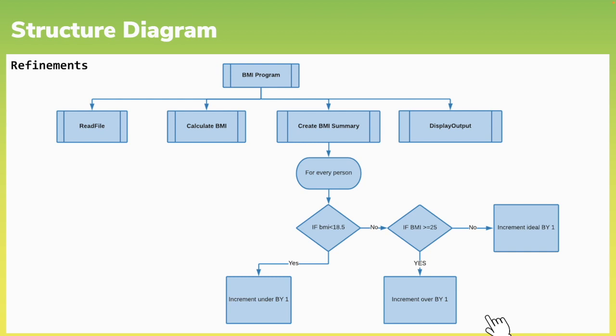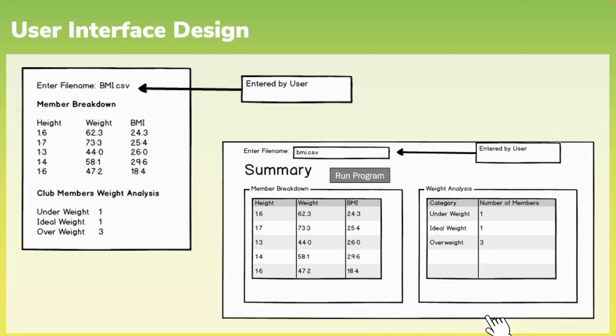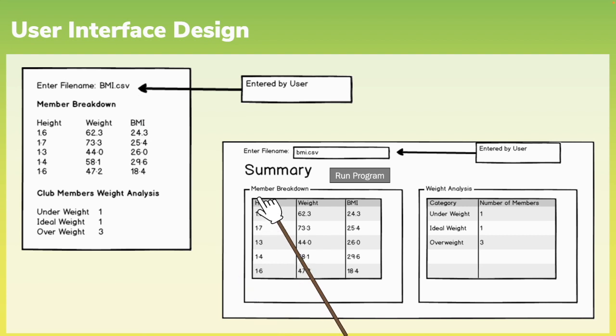In addition to designing how the software is going to work, either using a structure diagram or pseudocode, we must also take into consideration the user interface and how the user is going to interact with our programme. You can see from both examples of user interfaces on screen, we're specifying the file that the programme will work with, displaying all the BMIs and then our summary data.